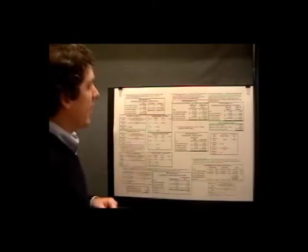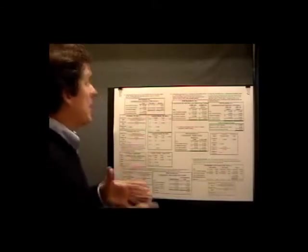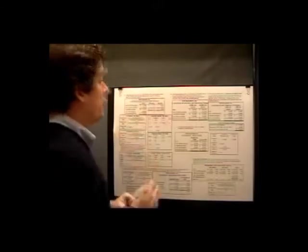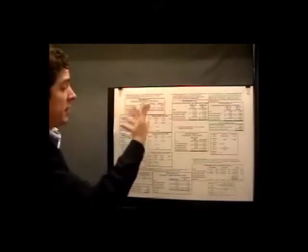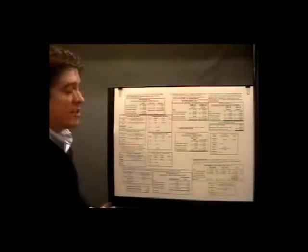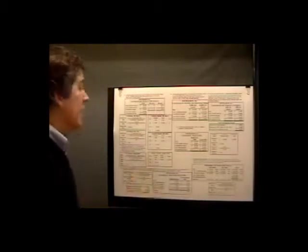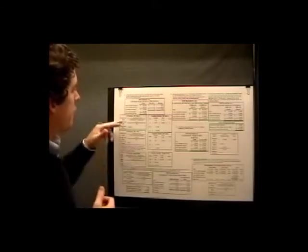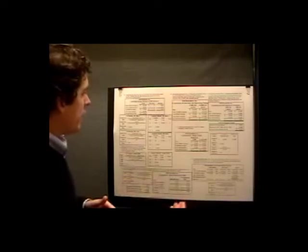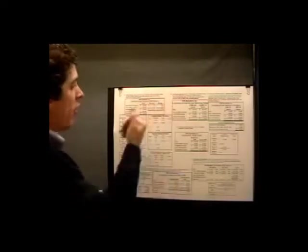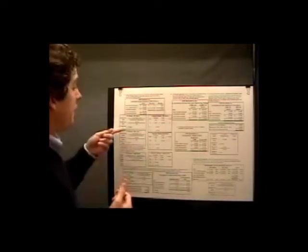On a per unit basis, that gives us $10 per unit sales price, $6 per unit variable expenses, and $4 per unit contribution margin. As a percentage, that's 100% sales, 60% variable expenses, and 40% contribution margin ratio. Using the contribution method, break-even sales equals total fixed cost divided by contribution margin ratio: $20,000 divided by 40% equals $50,000 of break-even sales.